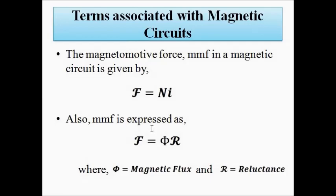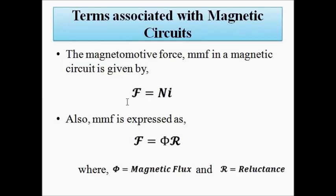Also, the MMF can be represented in terms of magnetic flux and reluctance — that is, it is the product of magnetic flux phi and reluctance R. So MMF equals phi multiplied by R. Please pay attention to these symbols as they are different from resistance and ordinary force. This is the second representation in terms of flux and reluctance.